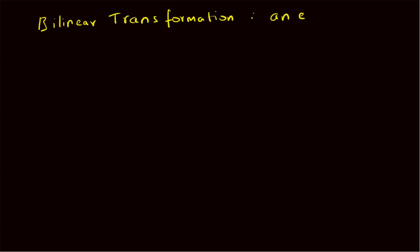Hello, welcome. In this short video let us look at an example illustrating the bilinear transformation method for converting an analog filter to a digital filter. Given the following analog filter system function H_a(s) equal to ωc divided by (s + ωc), we want to convert this into a digital IIR filter.